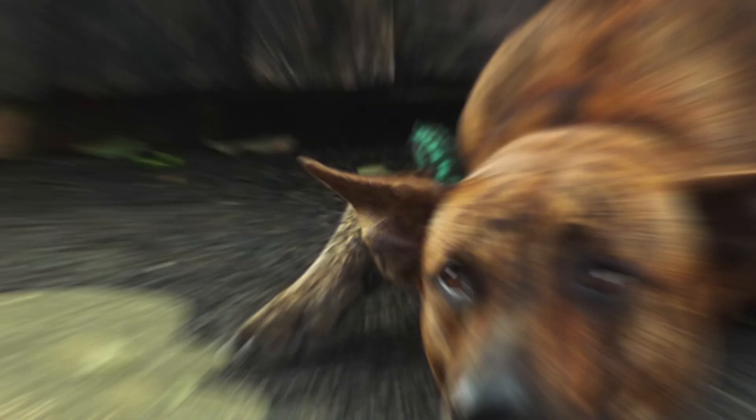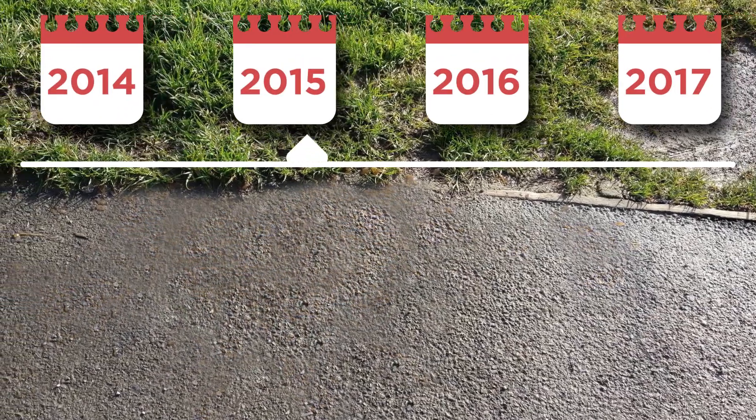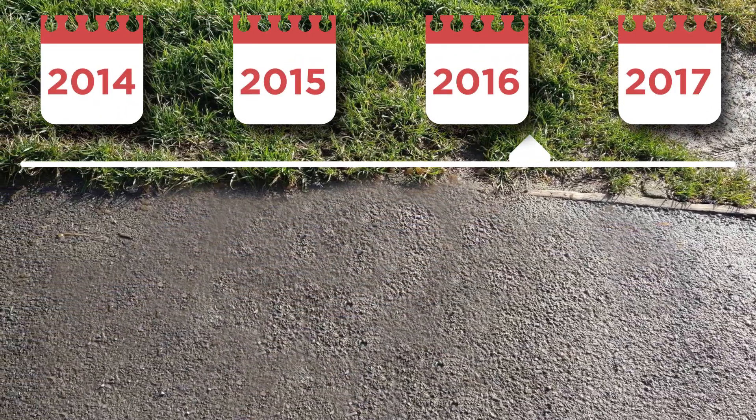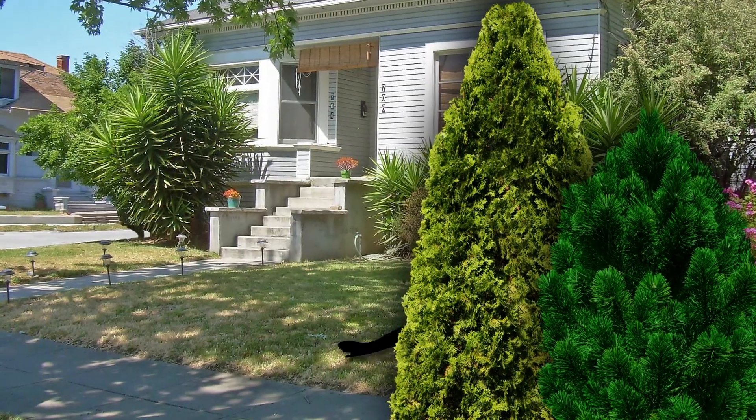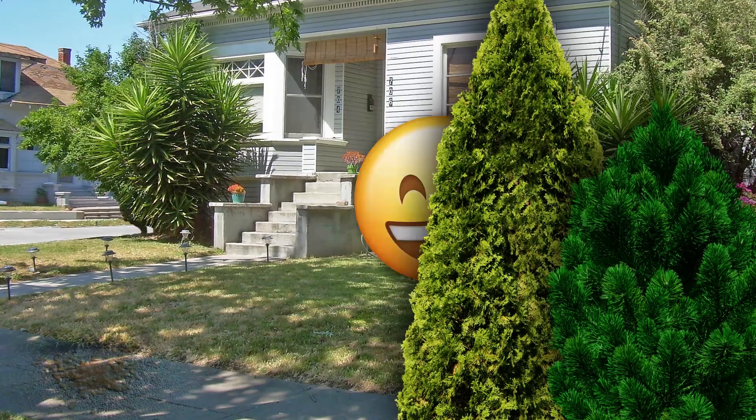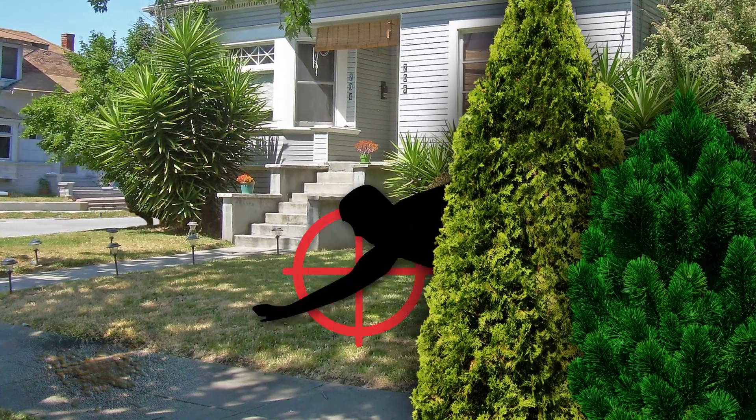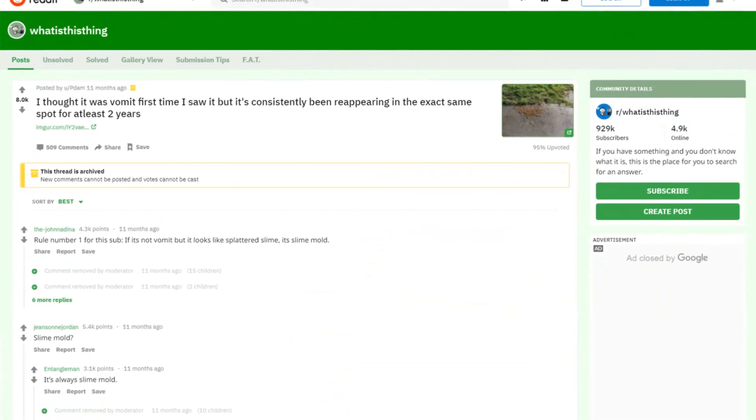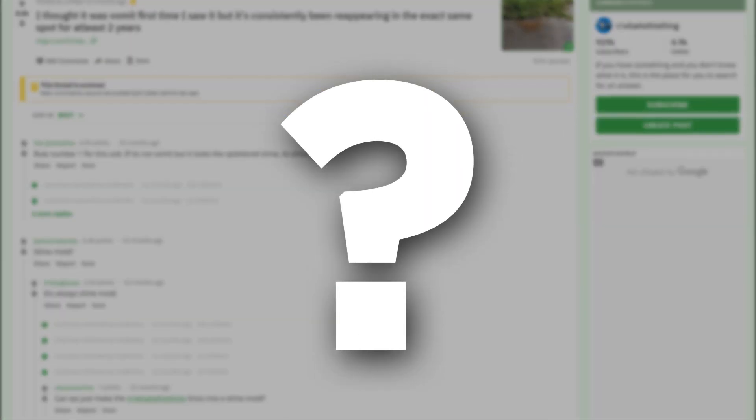That last question was raised when Redditor Pdamm noticed a patch of mysterious slime that kept reappearing in the exact same spot outside his house for over two years. At first, he thought he might have a serial puke prankster problem, but it always reappeared in exactly the same spot, and no one's aim is that good, right? Pdamm took to the trusty subreddit r/whatisthisthing for answers.